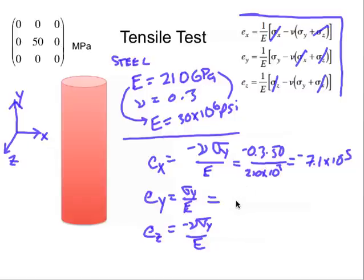Here we just have, straightforwardly, 50 divided by 210 times 10 to the 3rd. That gives us 2.4 times 10 to minus 4, and this should be the same as the value for e sub x, and it's minus 7.1 times 10 to the minus 5, and we'll make sure that that's clear that that's a 5.